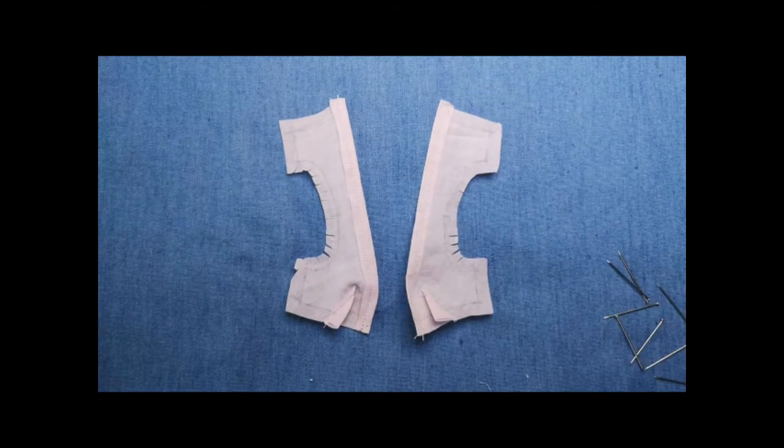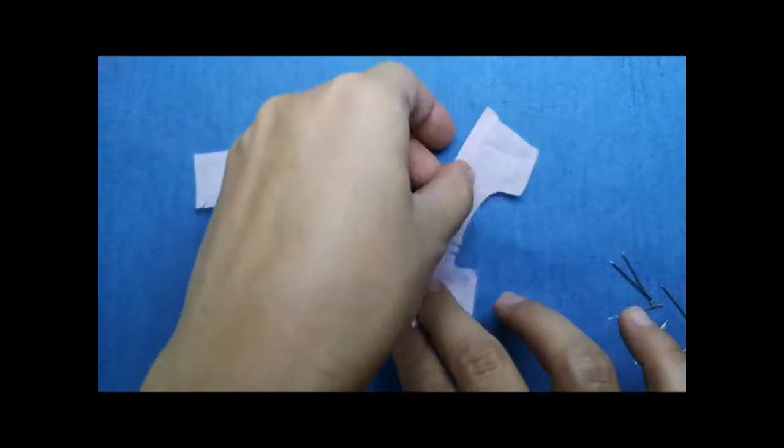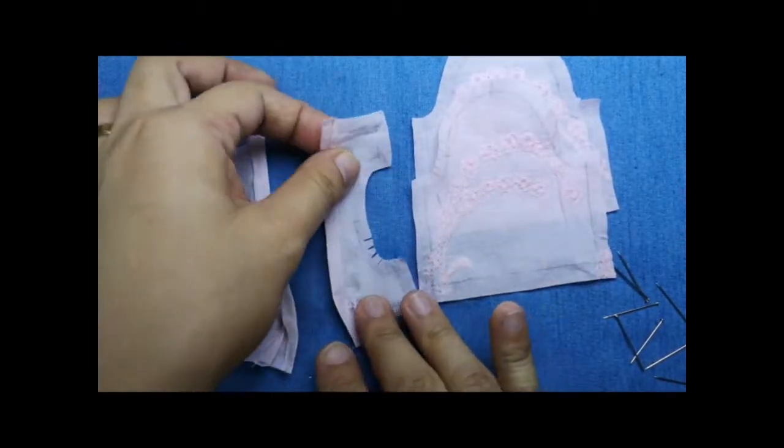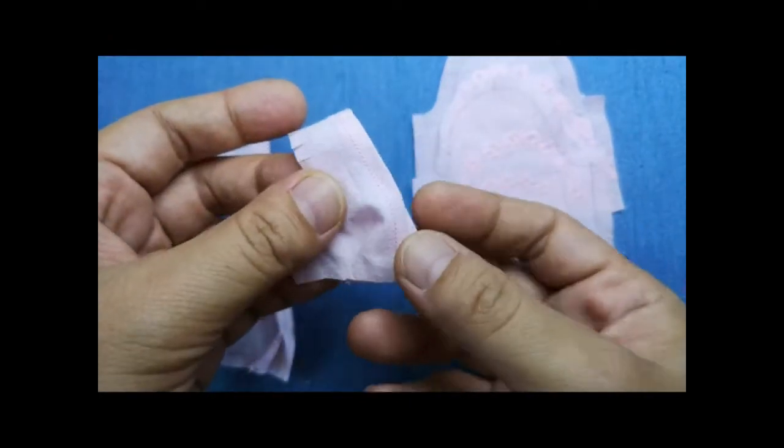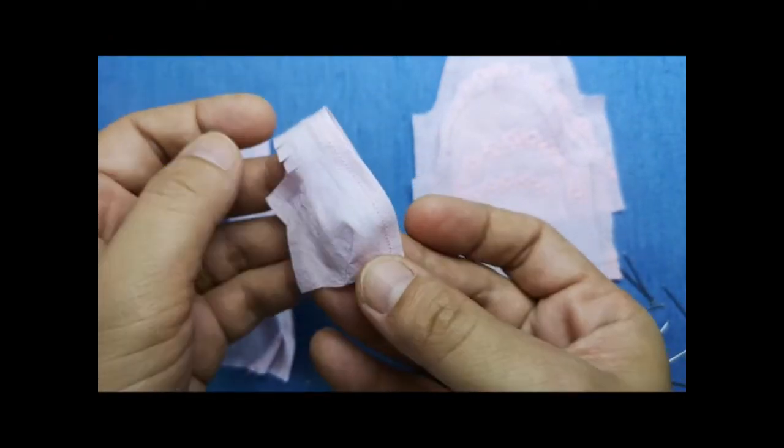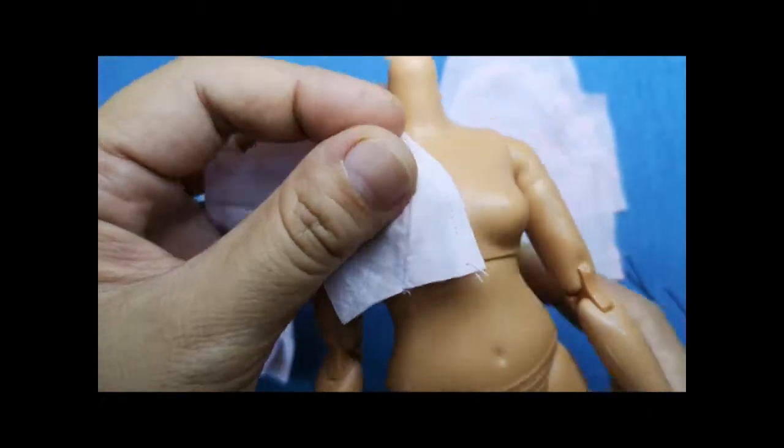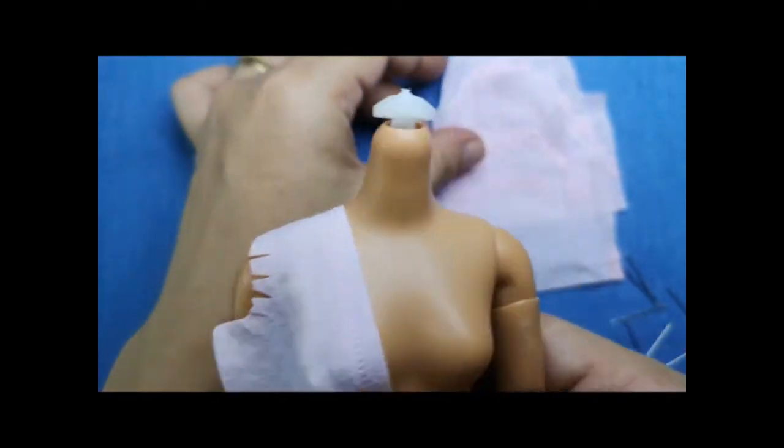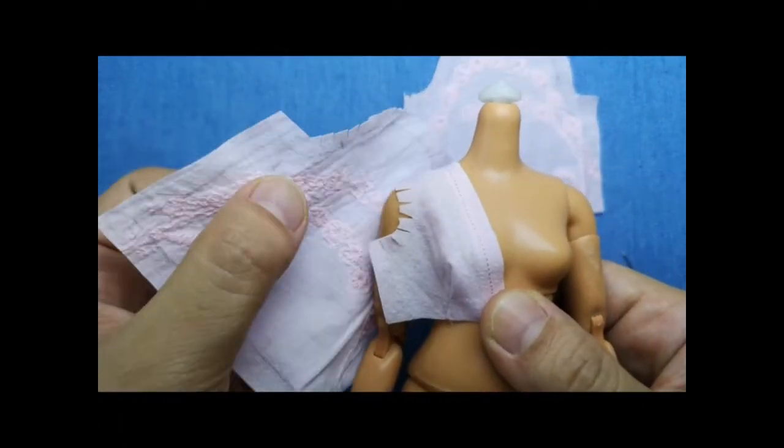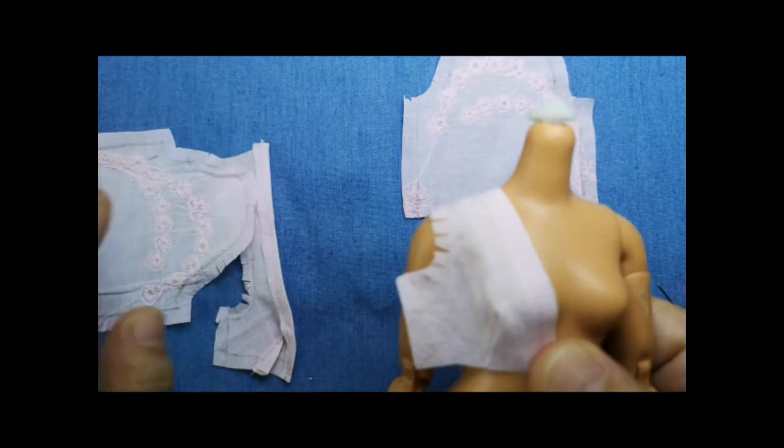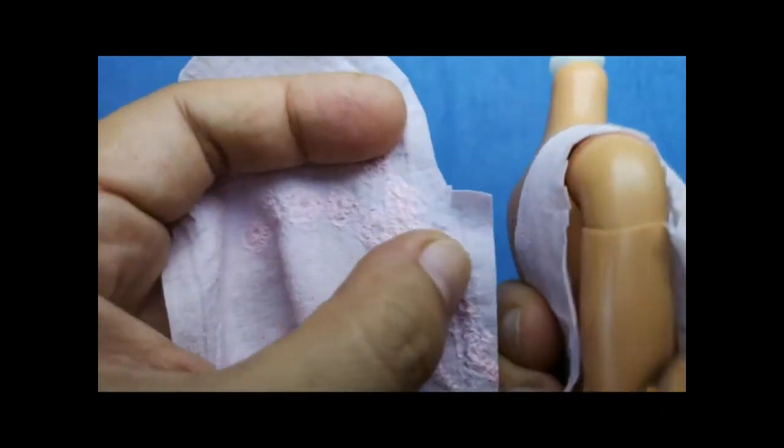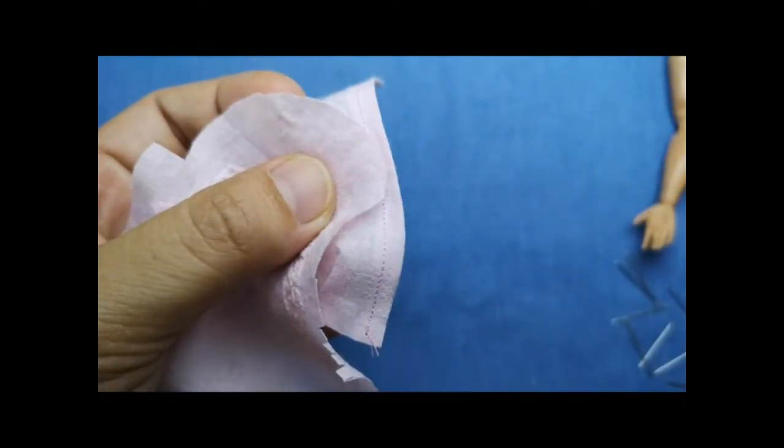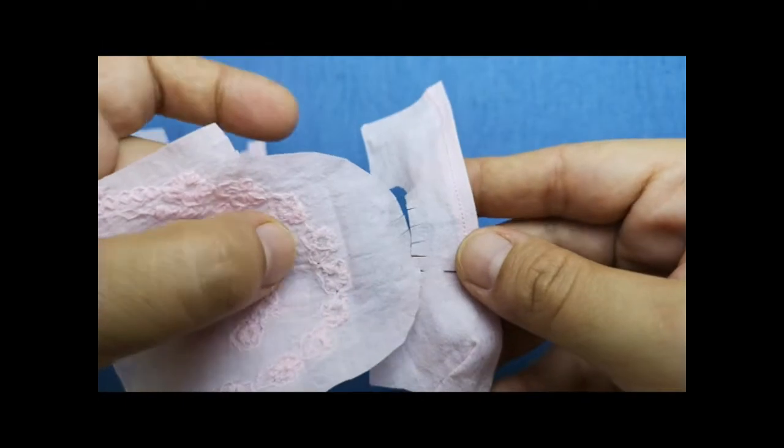The next thing we'll do is connect the sleeve to the armside or armhole. Make sure that your back armside matches that of the back arm sleeve hole curve like so.